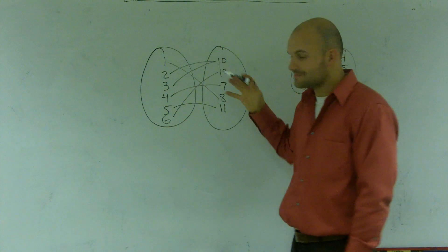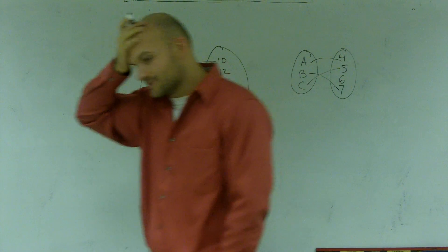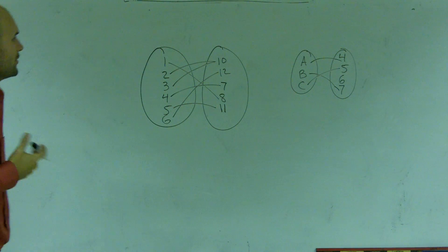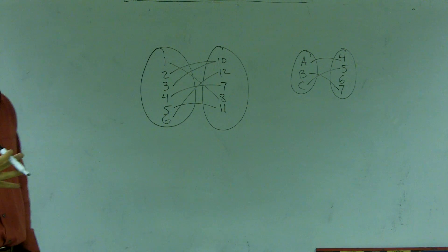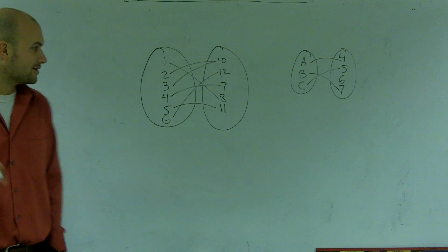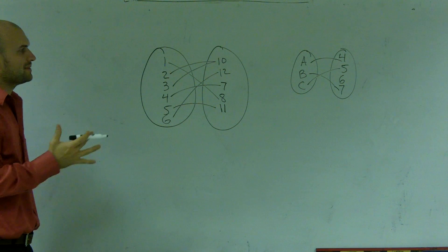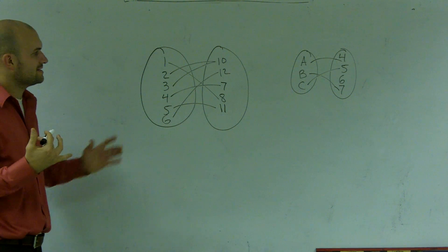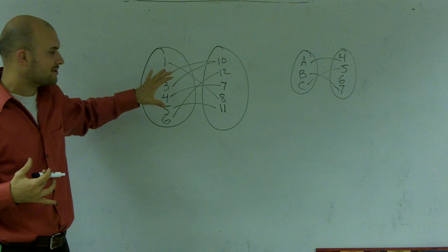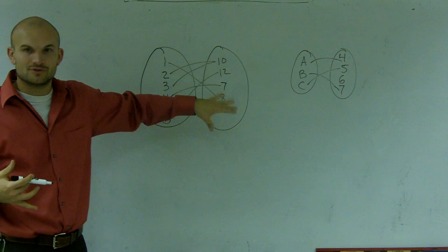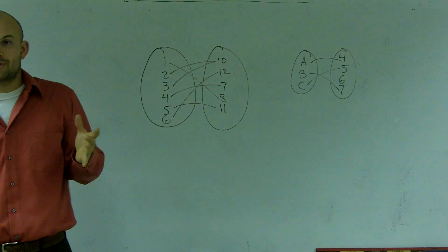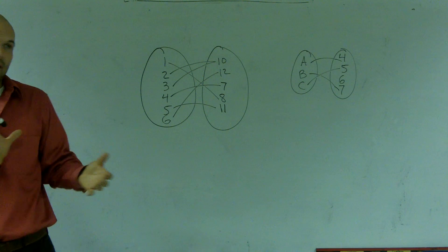So what I want to do is I want to show you how to find mapping, to find your domain and range. So when doing mapping, all mapping is is I'm taking a group of numbers and I'm relating them to another group of numbers. So this is what we call a relation, and it's called a relation by mapping.